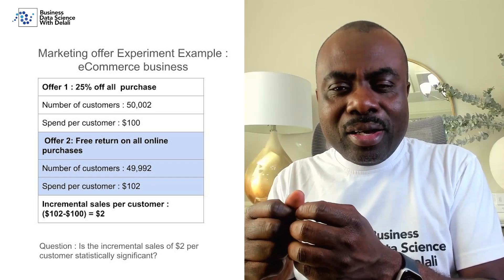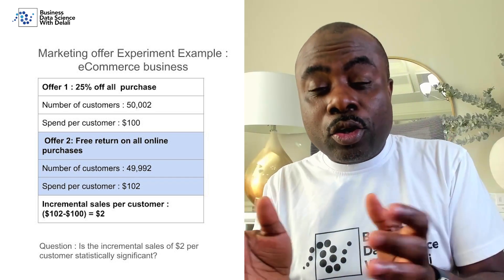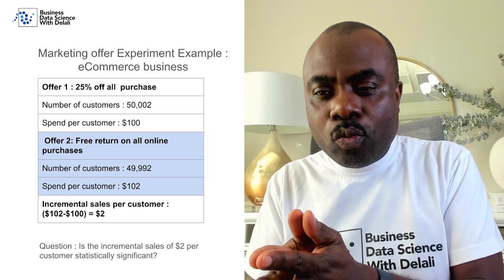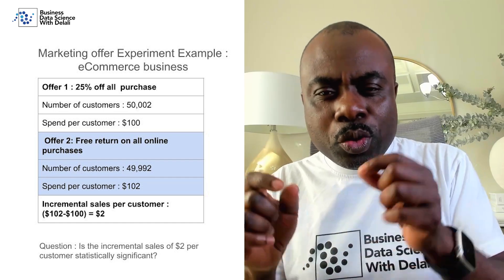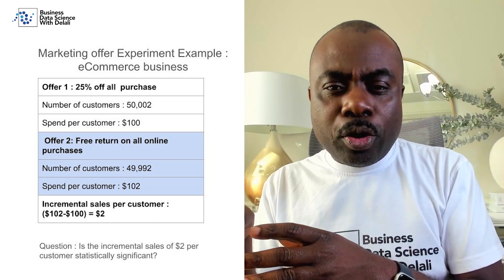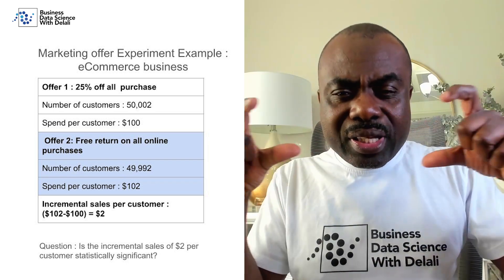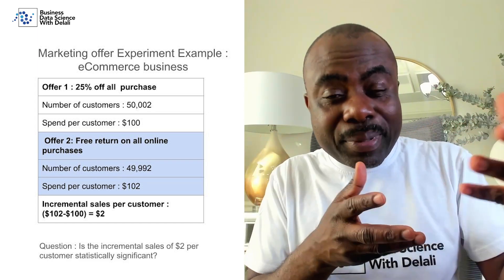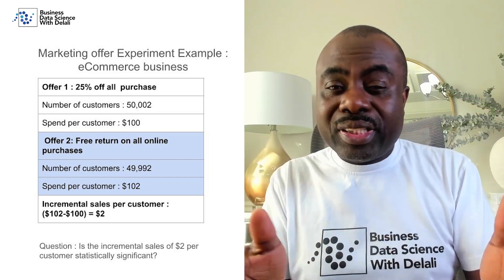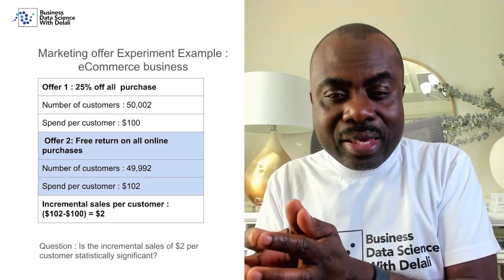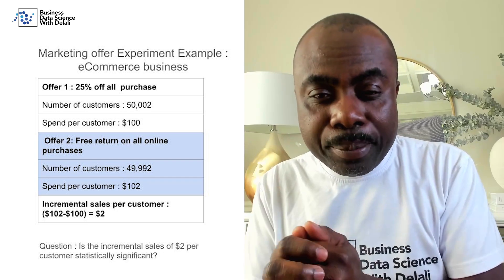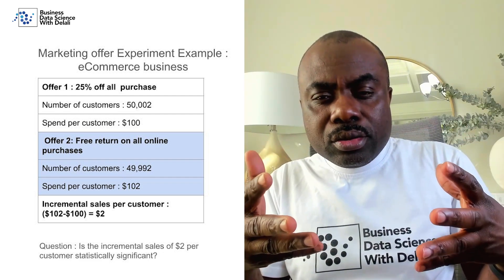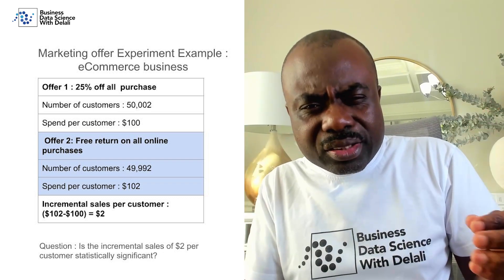The second group — the one with free returns on all online purchases — had an average sales per customer of $102. So one group has $100 and the other has $102, a $2 difference. You could say that $2 difference is an incremental sales per customer: for every customer in the free-returns group, there's a $2 increase in incremental sales.